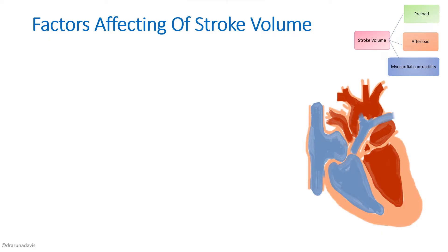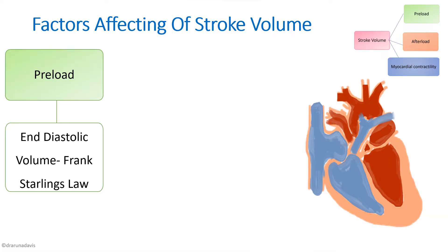The first factor affecting stroke volume is preload — the load that acts on the muscle before contraction. In case of the heart, it is the end diastolic volume. If end diastolic volume increases, there is increased stretching of the muscle, which increases length, which increases contractility, and in turn increases stroke volume. This follows Frank-Starling's law.